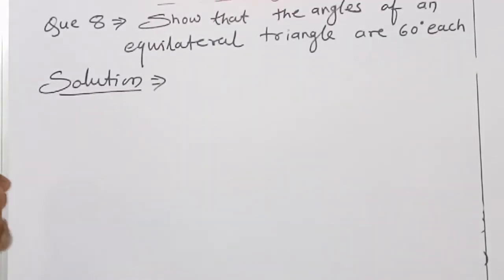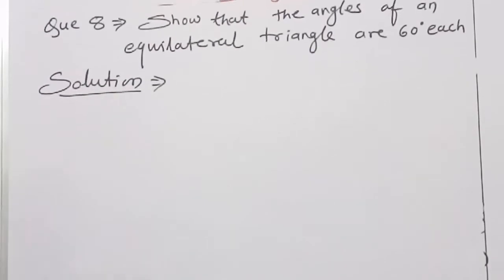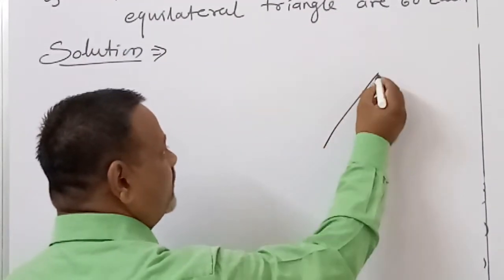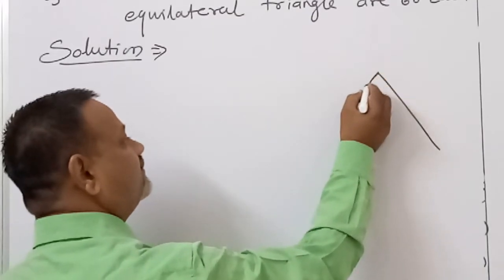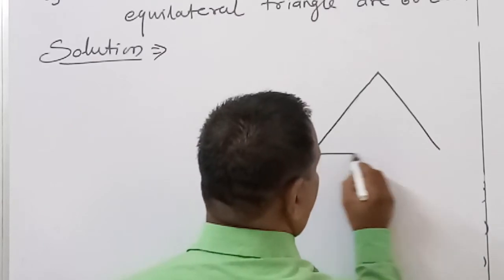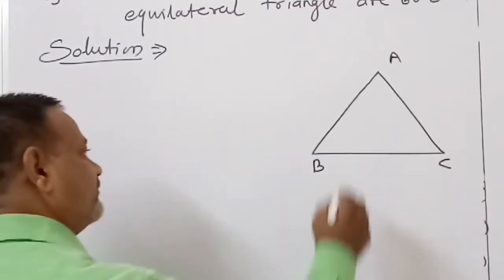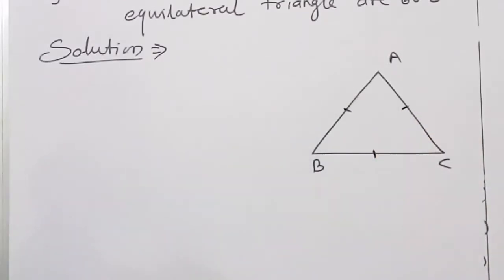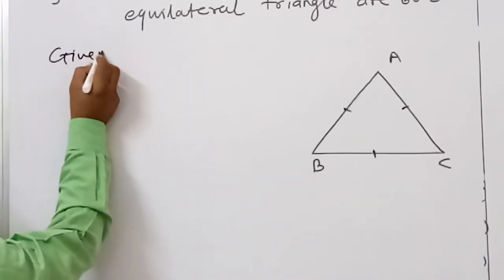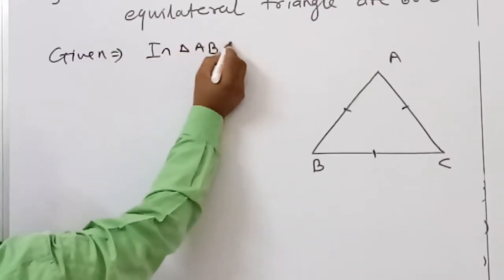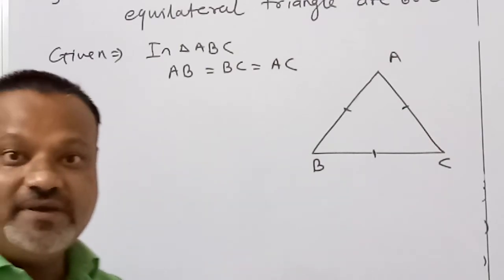Last question from this exercise: show that the angles of an equilateral triangle are 60 degrees each. Naturally the given information is that the triangle is an equilateral triangle, so we draw an equilateral triangle here. All sides are equal. Therefore AB equals BC equals AC. The given information, in triangle ABC, is AB equals BC equals AC.